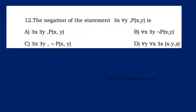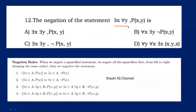Negation of the statement: there exists X, for all Y, P(X, Y). Using the rule for negating quantifiers — negate each quantifier left to right (∃ becomes ∀, ∀ becomes ∃) and negate the predicate statement. So the negation is: for all X, there exists Y, negation of P(X, Y).